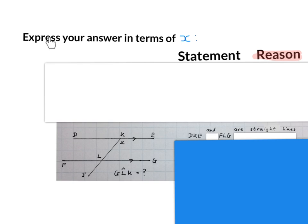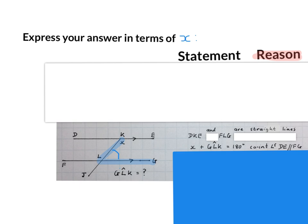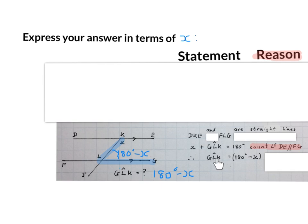Last question for this video. It says express your answer in terms of X. They gave us a picture and said work out the size of angle GLK — put your finger on G, move to L, move to K, they want the size of that angle. They also said DKE and FLG are straight lines, meaning all the lines you see here are straight lines. One way of answering: X plus angle GLK equals 180 degrees, co-interior angles — because the lines are parallel they add up to 180 degrees. So the size of angle GLK is 180 minus X. Please stop the video and get your brain around this answer.